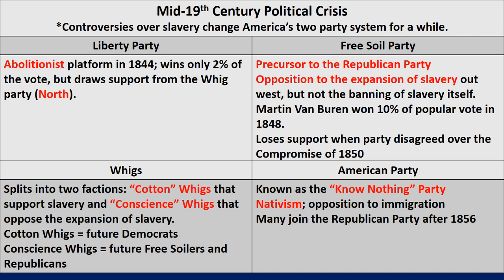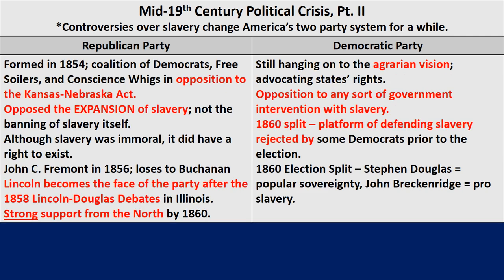The Whigs were still around but also split over the issue of slavery. Cotton Whigs supported the extension of slavery; Conscience Whigs opposed the expansion of slavery but not banning it outright. Cotton Whigs branched off into future Democrats, while Conscience Whigs branched off into future Free Soilers and Republicans. Usually when you see a party divide, you'll see their influence fade and decline. You also have the American Party forming on a platform of nativism, restricting immigrants, and anti-Catholic feelings — the Know-Nothing Party. Many of these people also joined the Republican Party after the election of 1856.